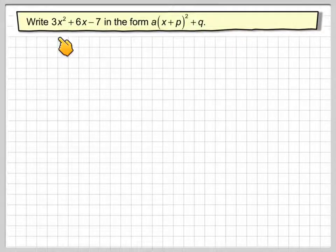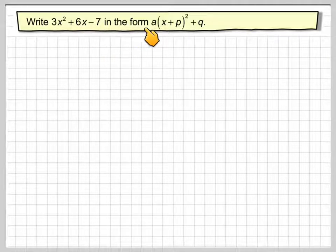Hi, in this video we're going to write 3x² + 6x - 7 in the form of a(x + p)² + q.